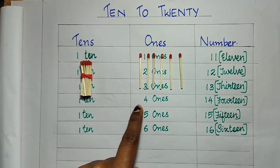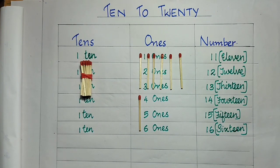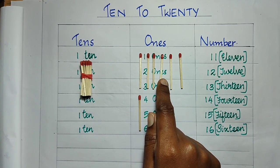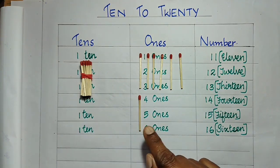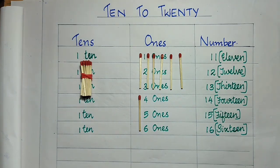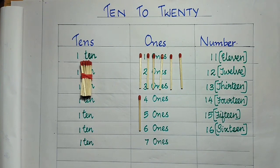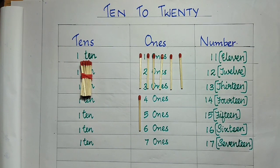Now, we have 16 math sticks. I am going to keep one more math stick here. How many math sticks are there in total? Let us count — this is 10, then 11, 12, 13, 14, 15, 16, 17. So, 10 plus 7 is 17. A bundle of 10 math sticks plus 7 math sticks makes 17. 1 ten and 7 ones is 17. Let us write it in words: S-E-V-E-N-T-E-E-N. 17.